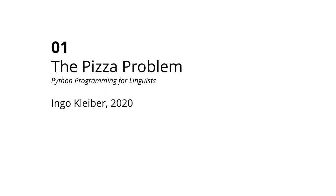Welcome to the second video in this workshop. This video has the number 01 because we start counting at zero, just as a quick reminder. In this video, the pizza problem, we are going to apply all the things and all the building blocks we have seen in the first video to a concrete problem. Here we are going to build a small program that solves an actual problem. Let's have a look at this specific problem.